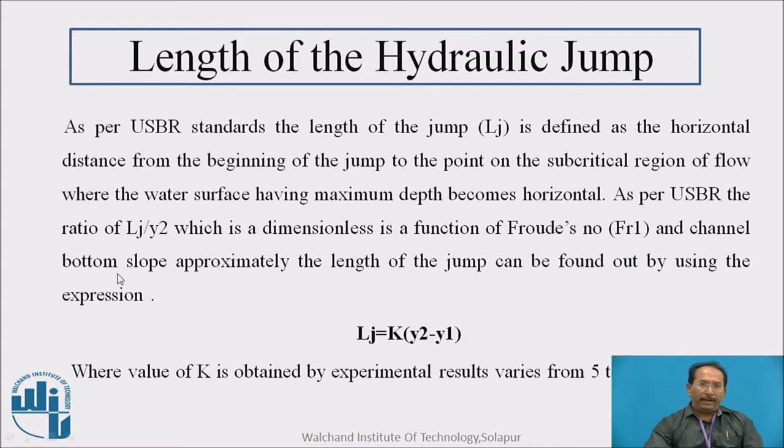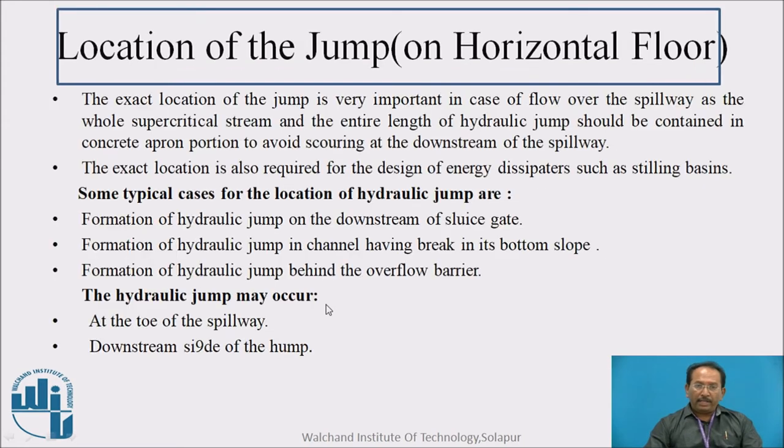Length of the jump, we can calculate as per the USBR. The length of the jump is defined as the horizontal distance from beginning of the jump to the point of subcritical region of the flow, where the water surface having maximum depth becomes horizontal. As per USBR, length of the jump is equal to k into bracket y2 minus y1, where k is obtained by experimental results varies from 5 to 6.9.